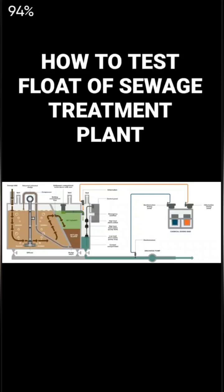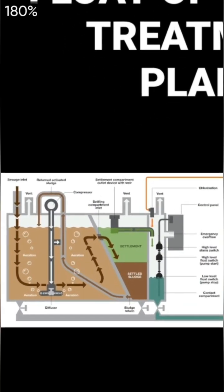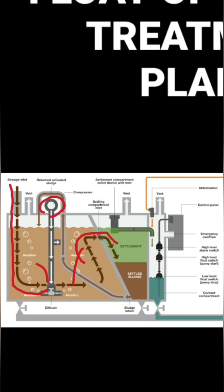We are going to test the float of a sewage treatment plant on board. As you can see, this is the basic diagram for a sewage treatment plant, in which the sewage inlet is happening here from the first chamber — the aeration chamber. Due to the bubbling of the first chamber by the compressor, bubbles are formed, and the flow eventually overflows into the settling tank, which is then recirculated back to the first chamber by means of the venturi effect.